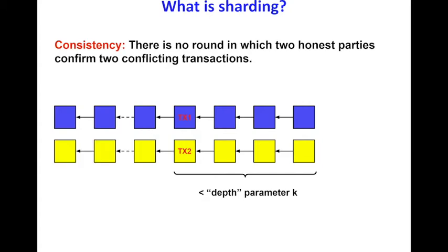In contrast to single blockchains, in sharding we require a second security property. We term this property consistency, and it states that there is no round in which two honest parties confirm two conflicting transactions. Consistency essentially conveys the atomic property of cross-shard transactions — that transactions spanning multiple shards should either abort or commit in all shards.